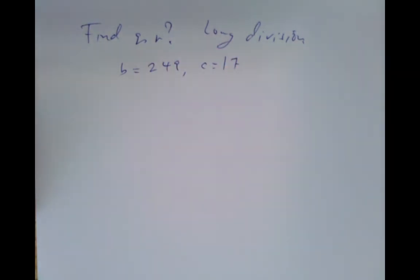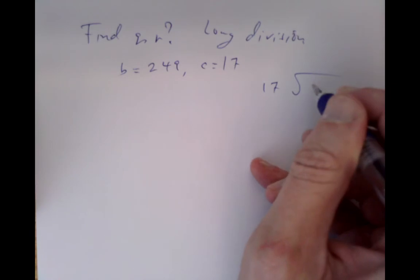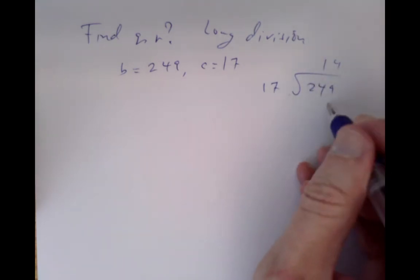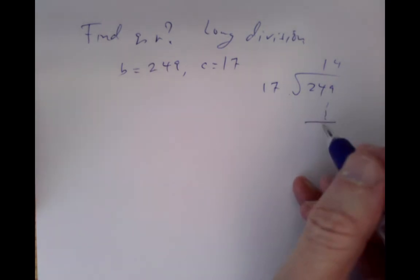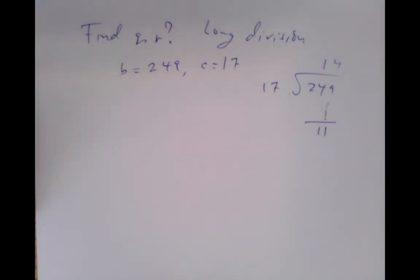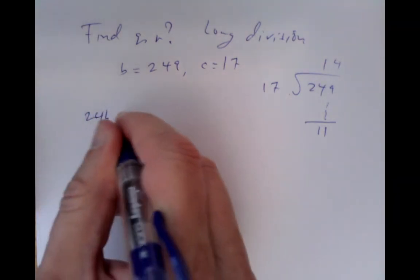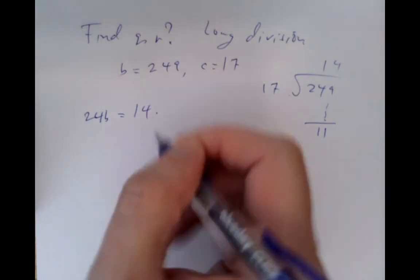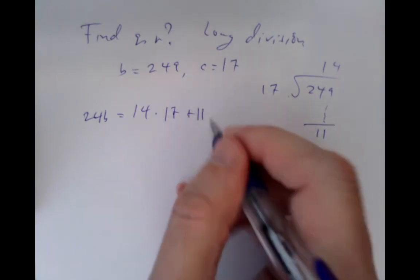There are some done in the book, but they're done in a particular notation that may not be the one you learned in secondary school. So if b equals 249 and c equals 17, how do we divide one into the other? We do some kind of long division. It turns out 17 goes into 249 fourteen times, and when you're done, you get a remainder of 11. So we can write: 249 equals 14 times 17 plus 11.